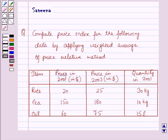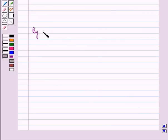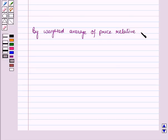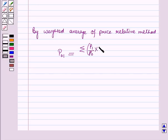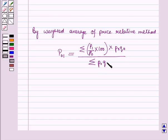Before starting the solution we should know a key result. By the weighted average of price relative method, P01 is equal to the summation of (P1/P0 × 100) × P0Q0, all divided by the summation of P0Q0.